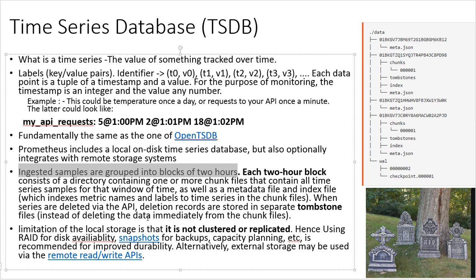Deleted records are stored in tombstones instead of being deleted immediately from chunk files — similar to the recycle bin on a desktop. Data is placed in the tombstone, and when space is heavily utilized it may be permanently deleted. Since there is no cluster mode or replication, it is recommended to use RAID for disk availability and snapshots for backup. Backup and capacity planning are recommended for improved durability. External storage may be accessed via remote read APIs.